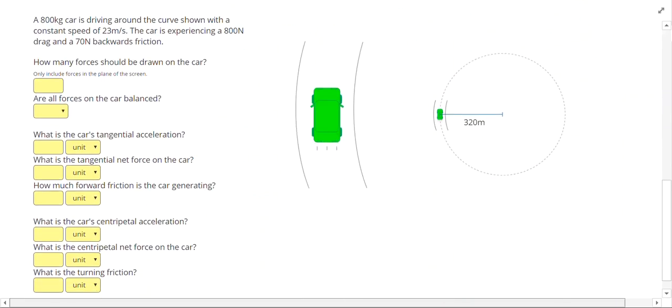Let's take a look at another kind of problem. So an 800 kilogram car is driving around the curve shown with a constant speed of 23 meters per second. The car is experiencing an 800 newton drag and a 70 newton backwards friction.